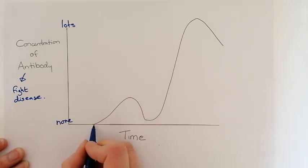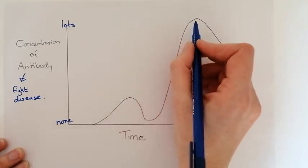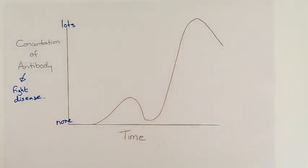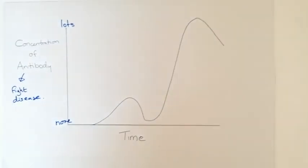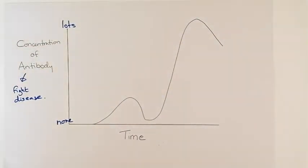So at the very beginning you'll see there's absolutely no antibody whatsoever. It goes up once and actually goes up a second time. Now this is a characteristic graph, you can be given this for absolutely any disease and you need to know what is going on.